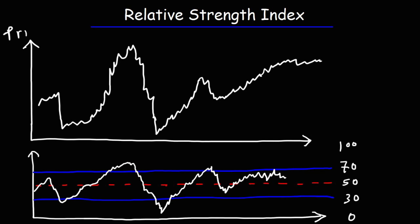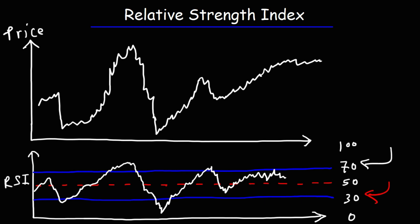Here we have the price chart on the top, and on the bottom we have a graph that gives us the values for our Relative Strength Index. Notice that when the price of the stock goes down, the RSI goes down with it. When the price of the stock goes up, the RSI values go up as well. The lower blue line at 30 indicates an oversold condition, and the upper blue line at 70 indicates the overbought condition.